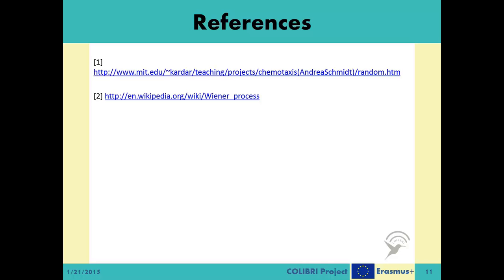So, we have given a general look at the microscopic theory of diffusion in the context of nanonetworking and molecular communications research in this video. We will be continuing with the channel capacity evaluation on top of this microscopic theory in the fifth video of the basic level. Here you can see the references of this video. Thank you for listening, and see you next time.